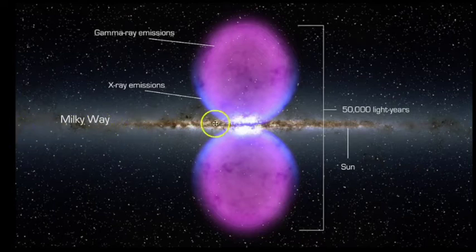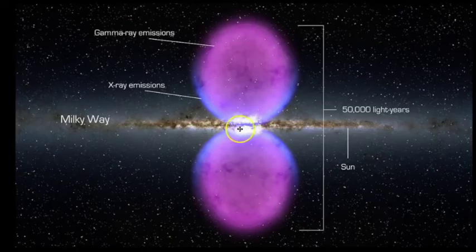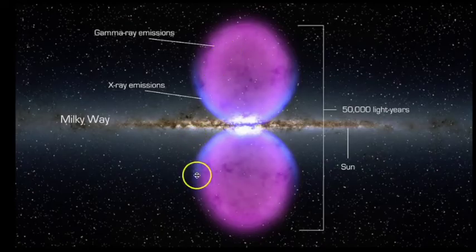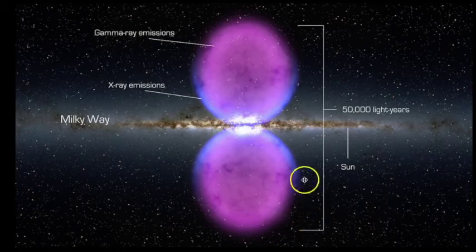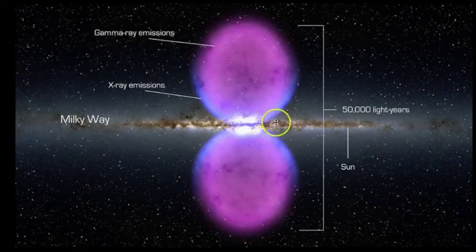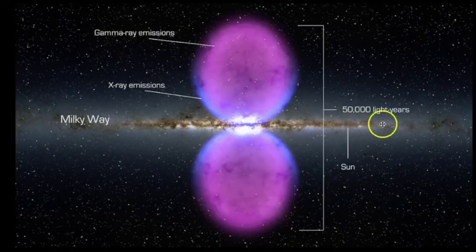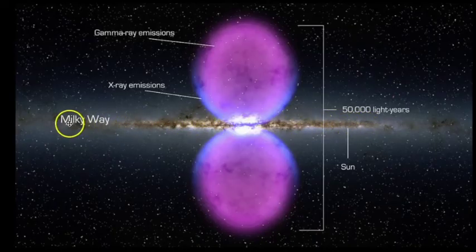Looking at the location of open clusters within the galaxy: here's the disk of the Milky Way, here is the nucleus, and here's what's considered the halo. The Sun is about two-thirds of the way out from the center of the galaxy, but open star clusters are only found within the disk of the galaxy.